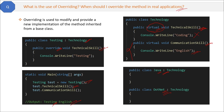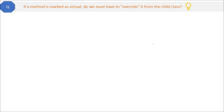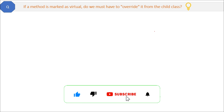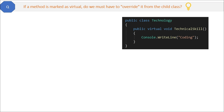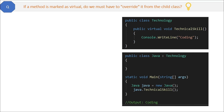If a method is marked as virtual, do we must override it from the child class? If you see the Java class, we are not overriding the method, but it is still working fine. So when creating the object of the derived class, it is not mandatory to always override the method. The answer is no — overriding a virtual method is optional and based on requirement. If you don't override it, there is no problem.